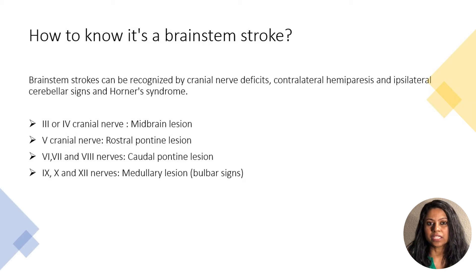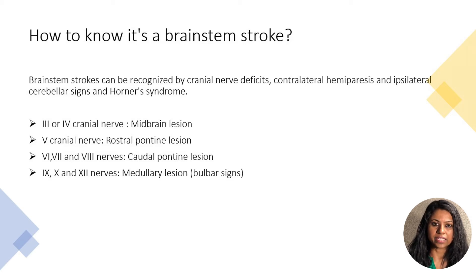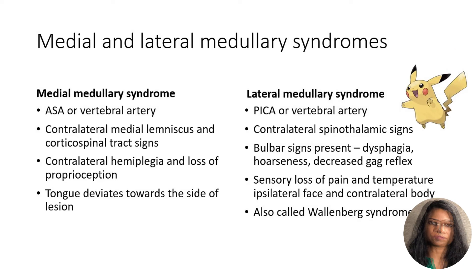Cranial nerve third and fourth involvement is seen in midbrain lesions. Nerves 5 to 8 involvement is seen in pontine lesions. And nerves 9, 10, and 12 involvement is seen in medullary lesions.